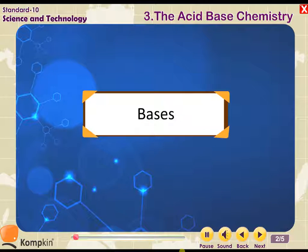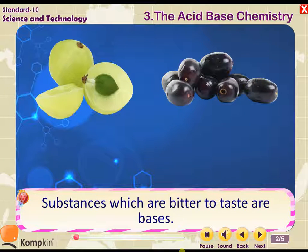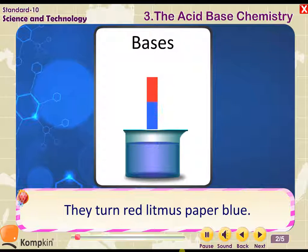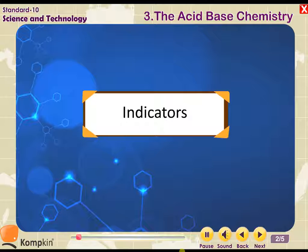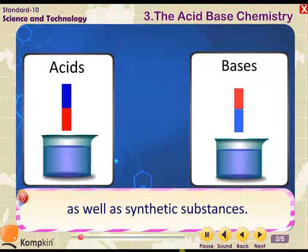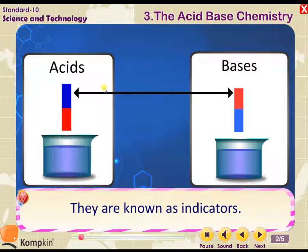Bases are substances which are bitter to taste. They turn red litmus paper blue. The acidic and basic nature of compounds can be indicated by some natural as well as synthetic substances. They are known as indicators.